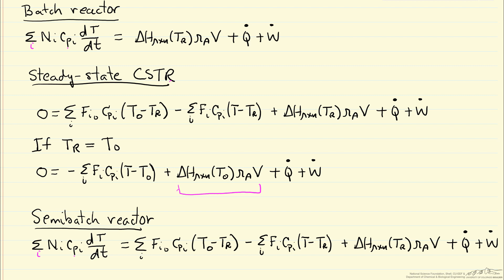And the semi-batch reactor is just a direct repeat of the steady state CSTR, because it depends on which terms are zero in the semi-batch as to which terms we cross out.